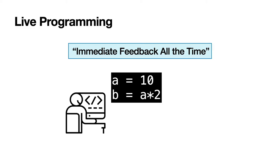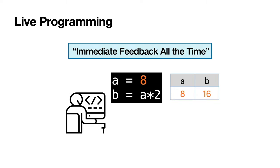Live programming is a paradigm in which immediate feedback is provided to the programmer each time the program is modified. Let's look at a given example. Immediately after the programmer finishes typing out the entire program, without having to run the program, they could know the runtime values of variable a is 10 and b is 20 from live programming.